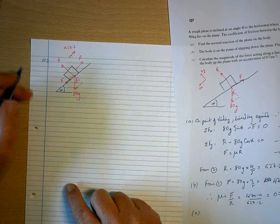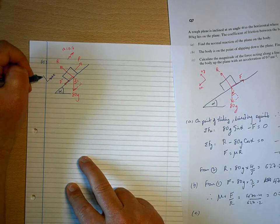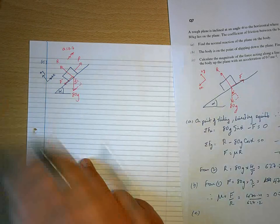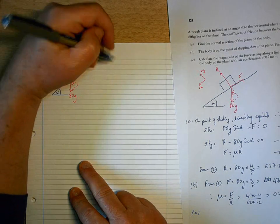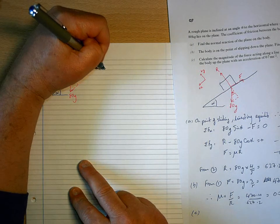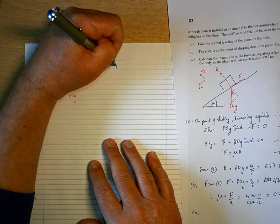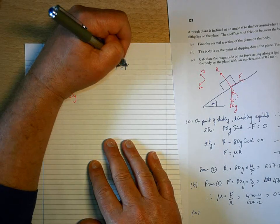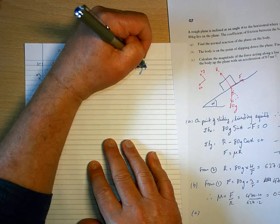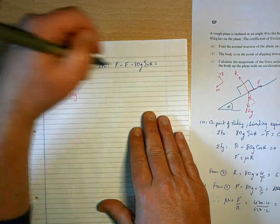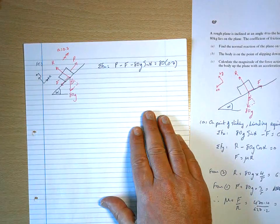I'm going to take direction of motion to be positive, so that changes this slightly now. What I'm going to work out is what P is. So we're now in the world of Newton's second law because it's not stationary. I'll have P minus f minus 80g sine alpha equals the mass, which is 80, times the acceleration, which is 0.7.